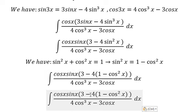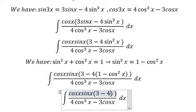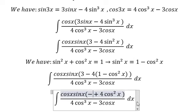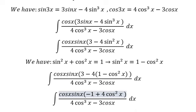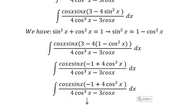So negative number four multiplied by this one, and that is about number three minus number four. We have negative number one, which is about cosine x. Simplify this one.